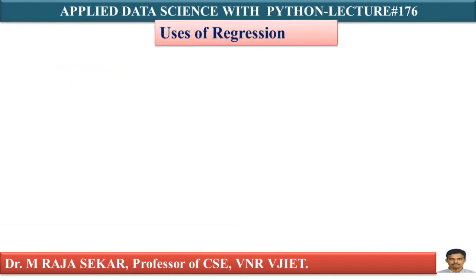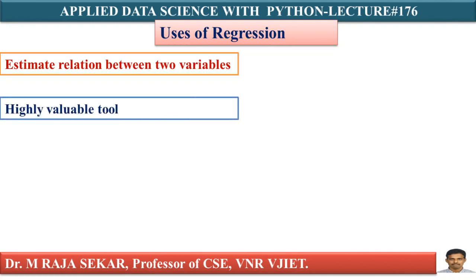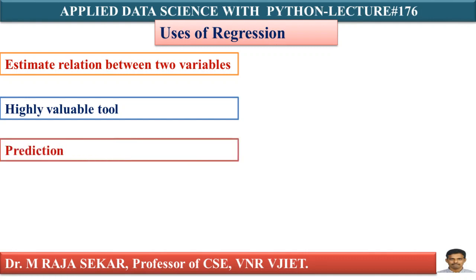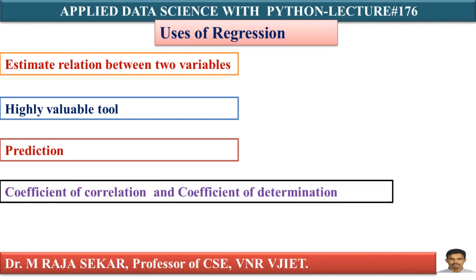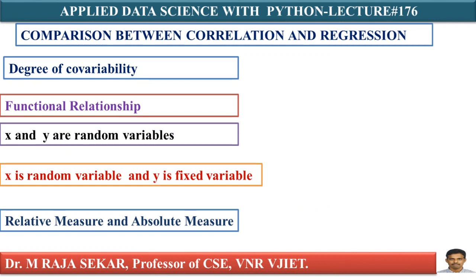Now we will try to understand the uses of regression. It is used to estimate the relationship between two economic variables like income and expenditure. It is a highly valuable tool in economics and business. It is widely used for prediction purposes. We can calculate the coefficient of correlation and coefficient of determination with the help of regression coefficient. It is useful in statistical estimation of demand curves, supply curves, production function, cost function, and consumption function.